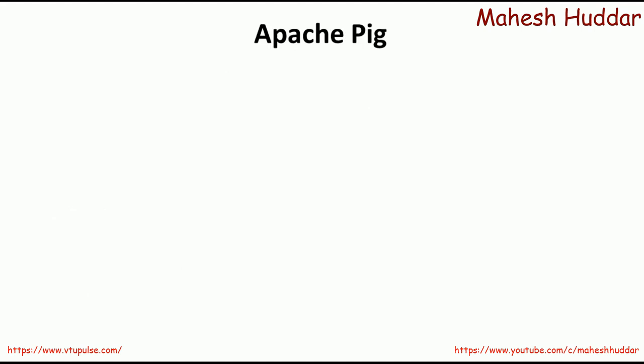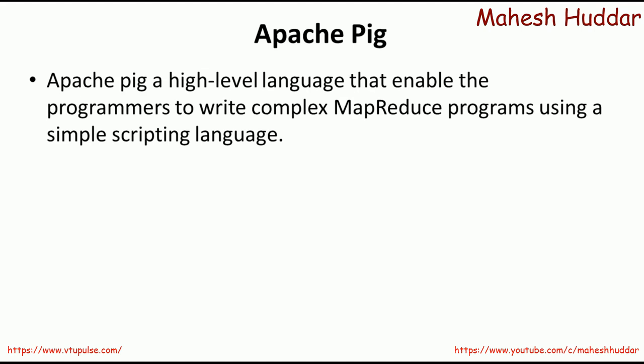First, we will try to understand what is Apache Pig. Apache Pig is a high-level language that enables programmers to write complex MapReduce programs using a simple scripting language. When it comes to MapReduce programs, we can use different programming languages like Java, C++, or Python to write and run MapReduce programs. But writing MapReduce programs in those languages is a bit complex in nature. To avoid that complexity, Apache Pig provides a very simple scripting language with which we can write and execute MapReduce programs.